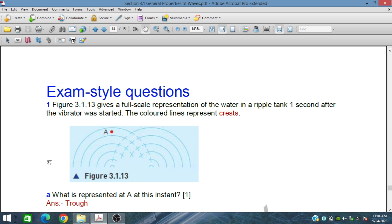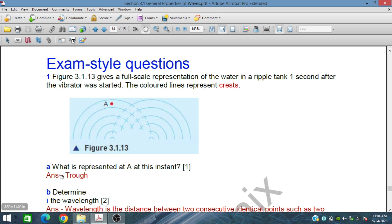We have obtained from the demonstration setup this kind of observations and what is represented at A at this point A at this instant. The colored lines represent crests. These blue lines are crests. Between two crests is a trough, so this red point is representing a trough.